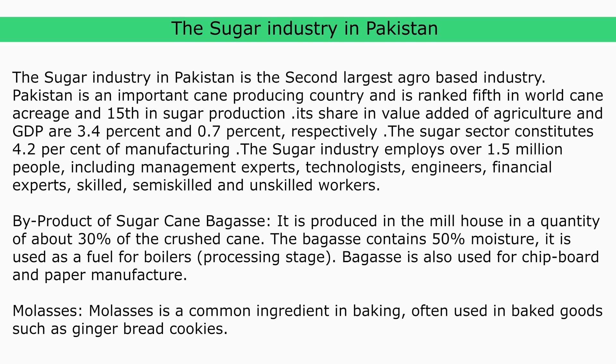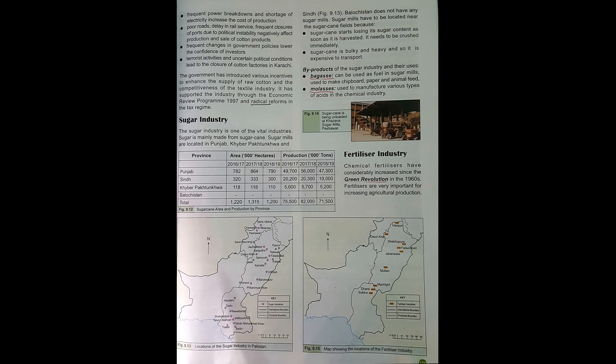Open page 159 and read more about the sugar industry. It is one of the vital industries and is very important for the economic development of Pakistan. Sugar is mainly made from sugarcane. Sugar mills are located in Punjab, Khyber Pakhtunkhwa, and Sindh. Most sugar mills are established in Punjab. Balochistan does not have any sugar mills.